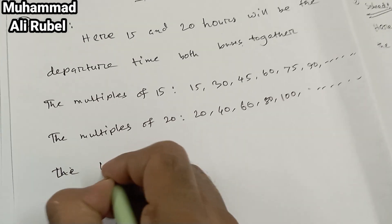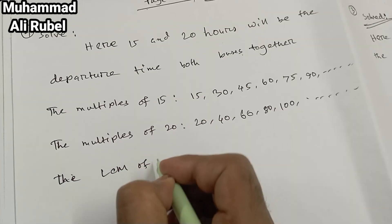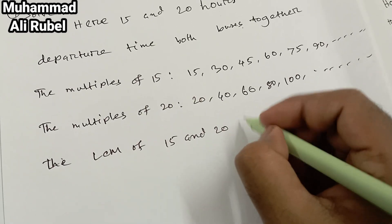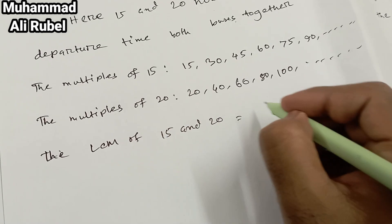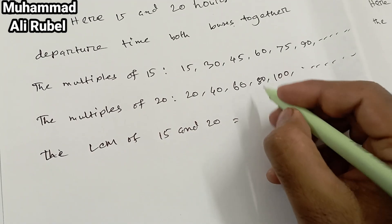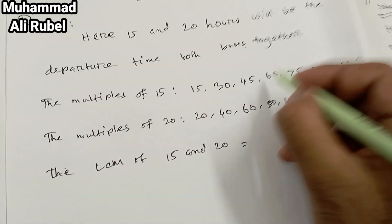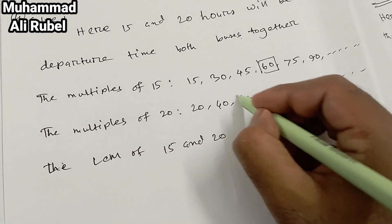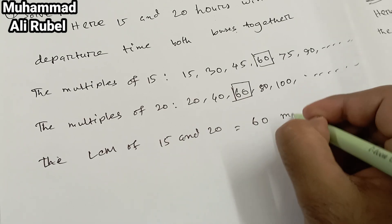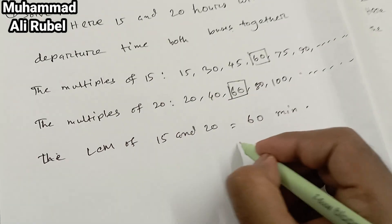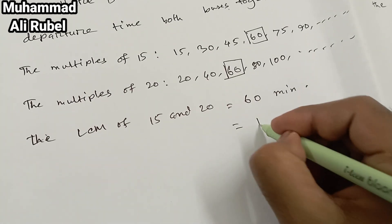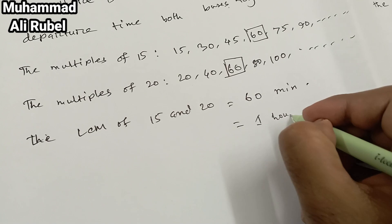The LCM of 15 and 20 equals 60. 60 minutes equal one hour.